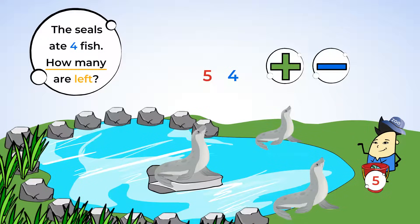We can check that to see if it makes sense. Zookeeper Ben brought five fish and the seal ate four. So, the number of fish got smaller. Yes, we definitely need to subtract. Okay. So, let's write a minus sign. Now, we can subtract.